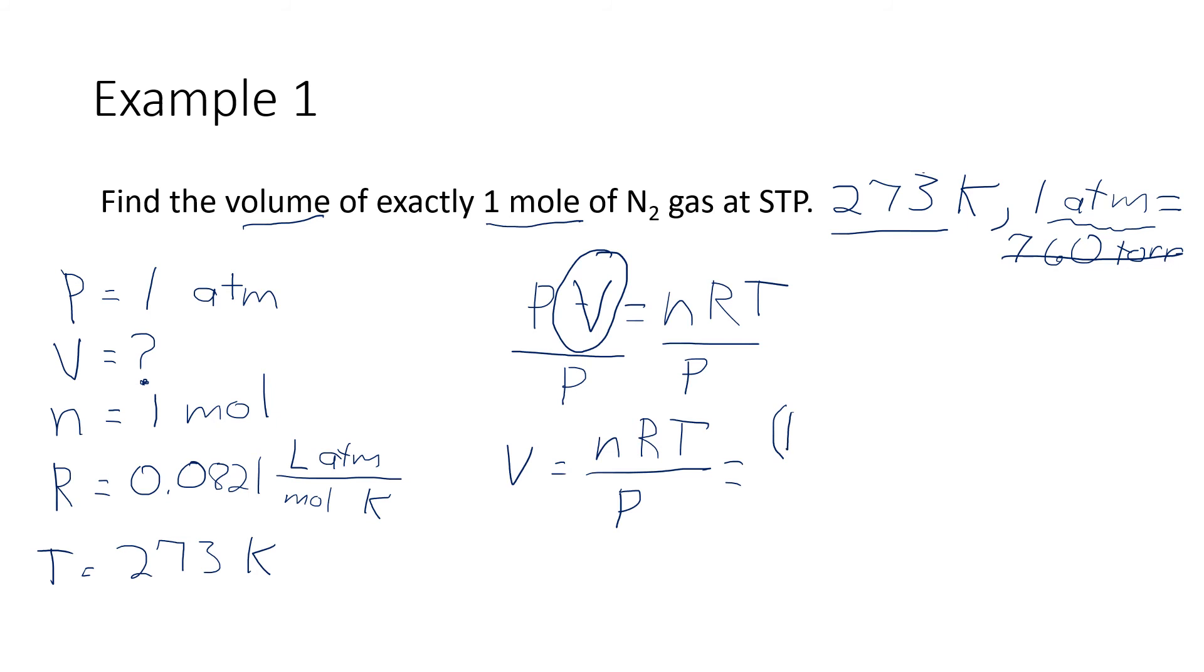Well, we know that we have one mole, that's our N. We know that R is 0.0821 liters times atmospheres divided by moles and Kelvin. And then the temperature is 273 Kelvin and pressure is one atmosphere. So if I go to run this through my calculator, I went ahead and I wrote atmospheres down in the bottom.